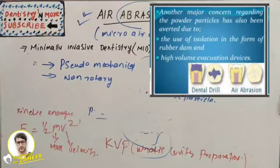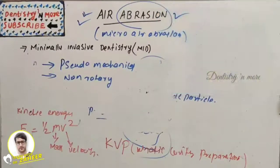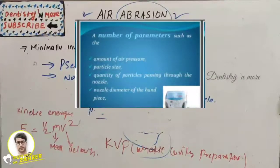Another major concern regarding the powder particle has also been addressed due to the use of isolation in the form of rubber dam and high volume evacuation devices. The number of parameters we need to think about when going for air abrasion include: amount of air pressure, particle size, quantity of particles passing through the nozzle.